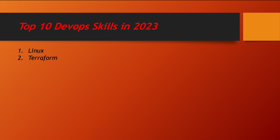Instead of going and manually creating AWS machines, creating VPCs, deploying load balancers — all these tasks can be done in the form of infrastructure as code, meaning in the form of a program. So Terraform has really gained a lot of popularity. We have a very good playlist for Terraform which covers almost each and every concept related to Terraform along with industrial knowledge.